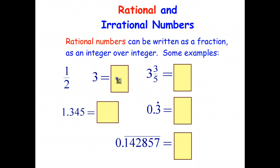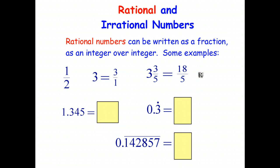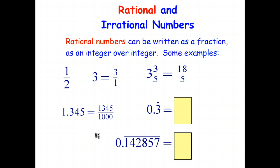Whole numbers are rational numbers because they can be written as fractions — for example, 3 over 1. Mixed numbers are rational numbers because they can be written as improper fractions. Terminating decimals that have a fixed number of decimal places are rational numbers — for example, 1.345 can be written as 1,345 over a thousand.